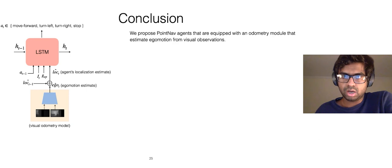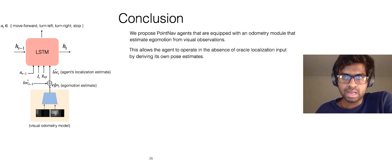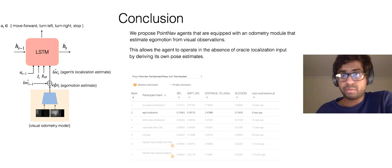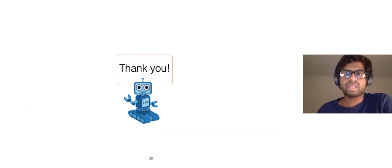So to summarize, we propose point-goal navigation agents that are equipped with odometry modules that estimate ego motion from visual observations, allowing the agents to navigate in the absence of ground-truth GPS and compass. Our best-performing agent is ranked number two on the test standard leaderboard with respect to SPL and success, and number one with respect to soft SPL and distance to goal. Thank you.